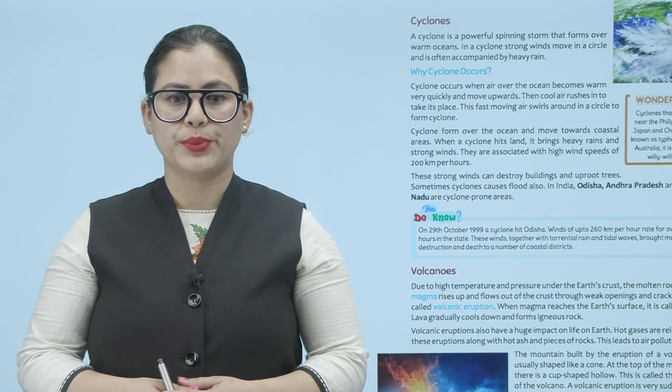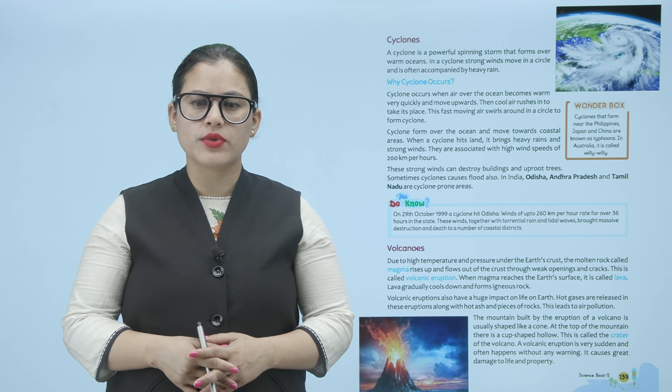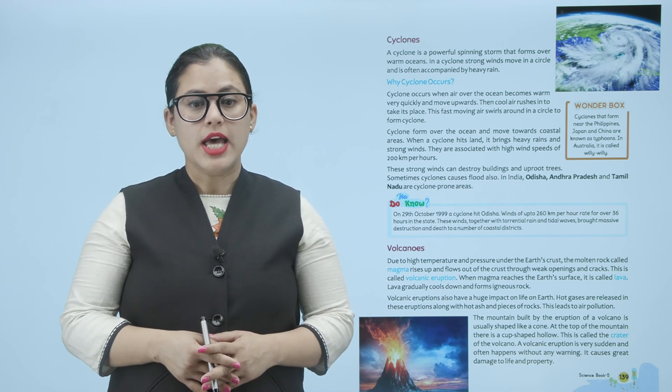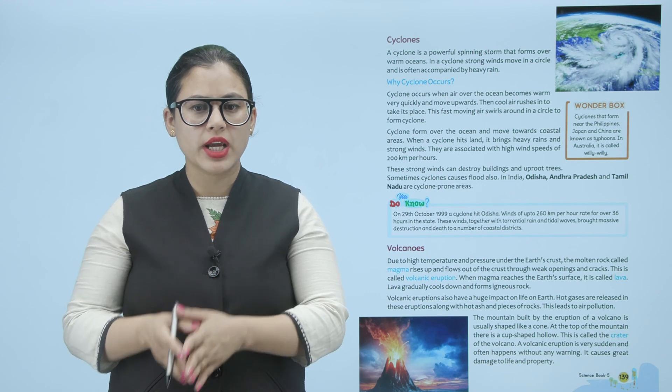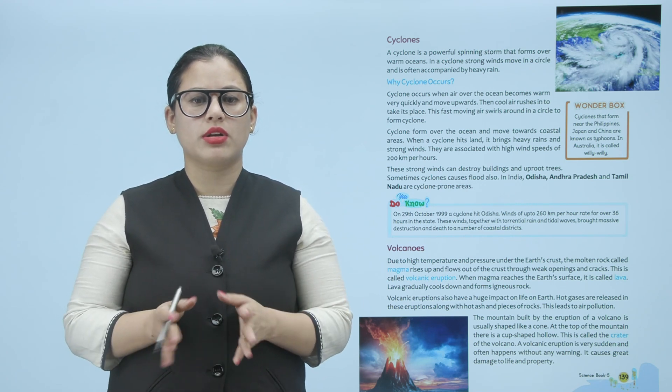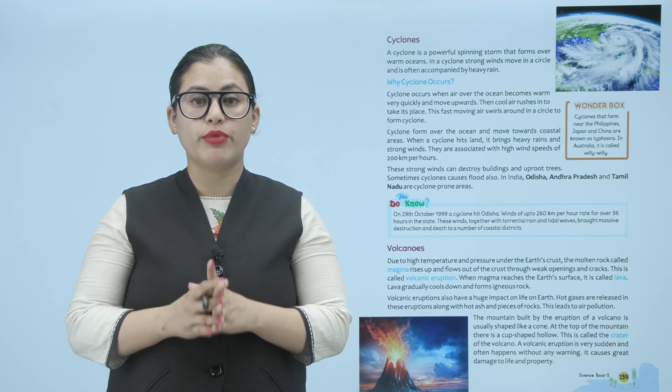On 29 October 1999, a cyclone hit Odisha. Winds of up to 260 km per hour raged for over 36 hours. These winds, together with torrential rain and tidal waves, brought massive destruction and death to a number of coastal districts. India mein 29 October 1999 ko cyclone ne Odisha mein hit kiya, jis mein winds 260 km per hour ki speed se 36 hours ke liye chal rahi thi, aur Odisha mein kaafi zyaada destruction hua.